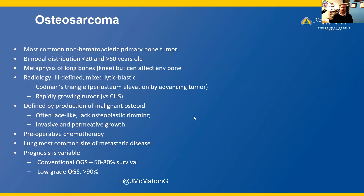Osteosarcomas generally grow rapidly, which is in contrast to conventional chondrosarcomas, which are more indolent, slow-growing tumors. Osteosarcoma is defined by the production of malignant osteoid, which is often lace-like and lacks osteoblastic rimming. Osteosarcomas grow in an invasive and permeative pattern.